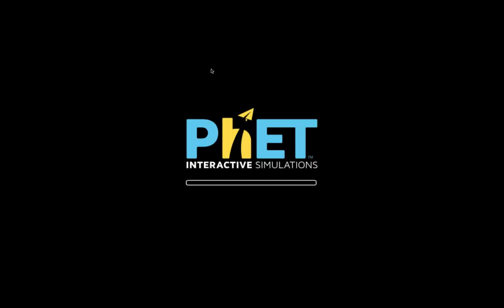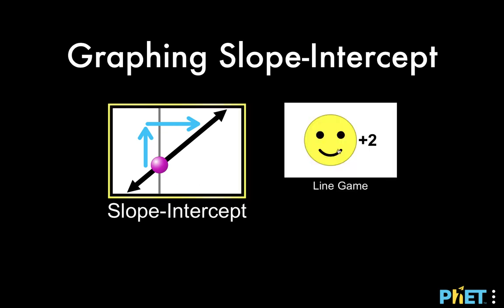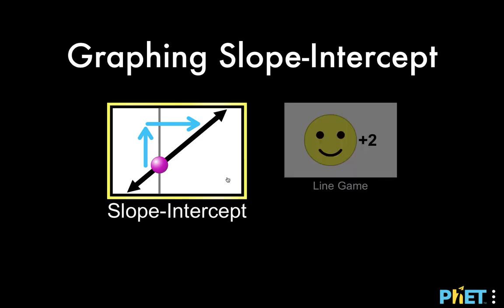Select this icon and you will see two options: one labeled Slope Intercept, and the other is Line Game. The first one we are going to use for a short review, and the second option we are going to use for enrichment activities. So let's begin with a short review.